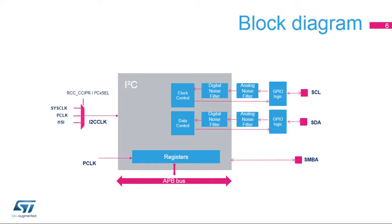Analog and digital noise filters are present on the SCL and SDA lines. In addition, an SMBus alert pin is available in SMBus mode.